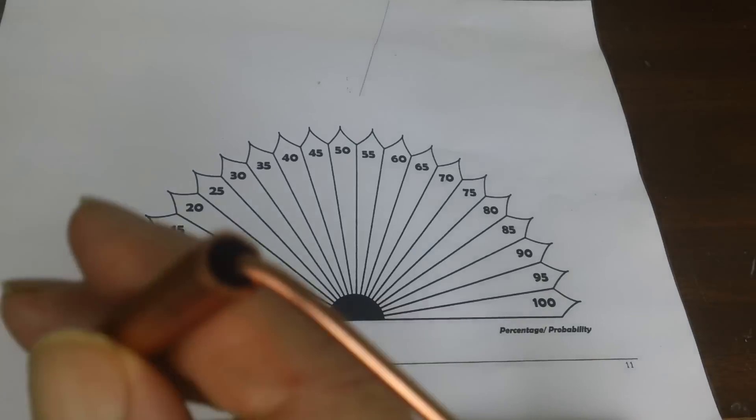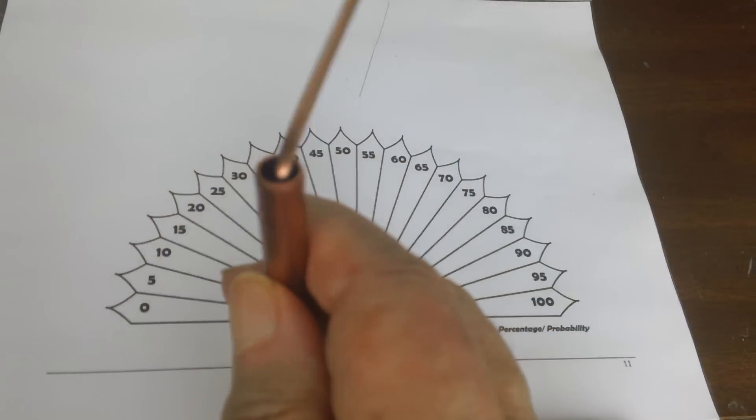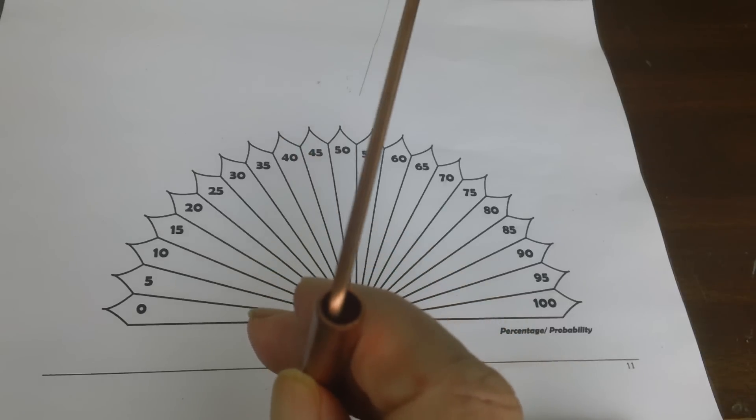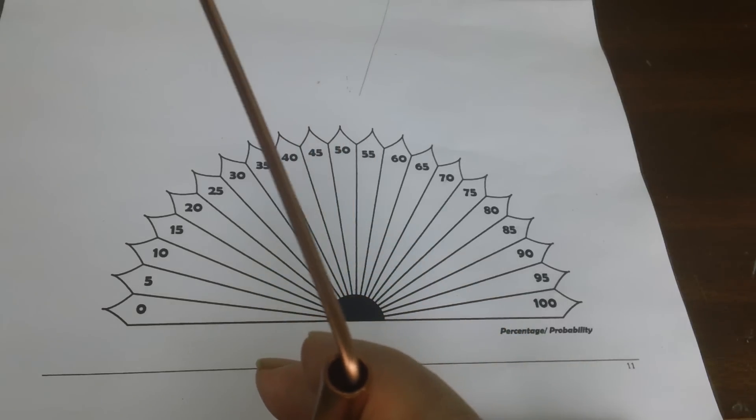Dowsing for gold. I'm going to use my dowsing rod. It's an L-Rod, a miniature L-Rod.